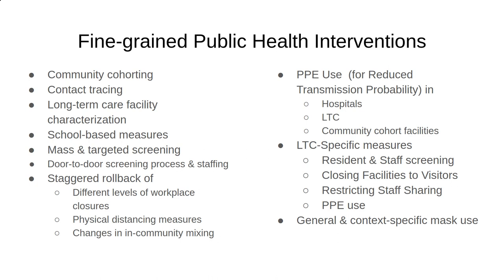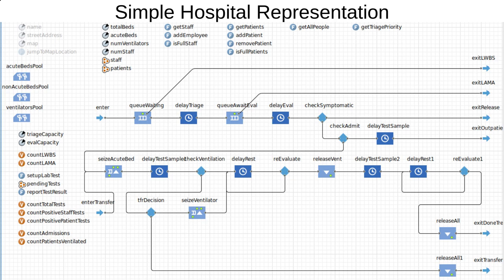The model is designed to allow us to look at portfolios of very fine-grained public health interventions — which would be quite infeasible to examine with an aggregate model — whether it's specific rules involving community cohorting, contact tracing, door-to-door screening, particular school-based measures, measures that depend on individual history associated with screening, different rollback strategies, or PPE use. There are a variety of textured issues that take advantage of the model's resolution at an individual level.